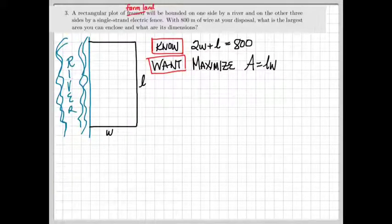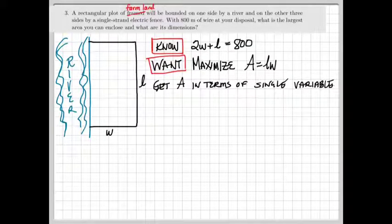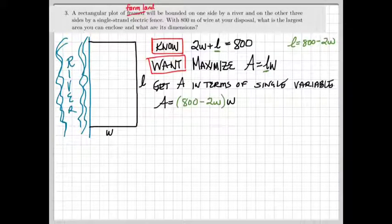In order to get this in terms of one variable, it looks simpler to solve the given information for L and substitute, but it's really not that different if you chose to solve for w. So solving for L, we find that L is 800 minus 2w.